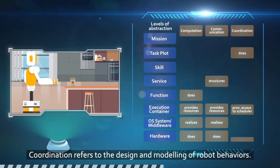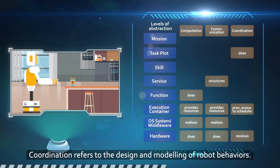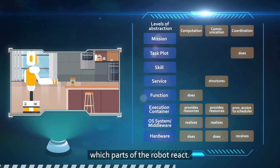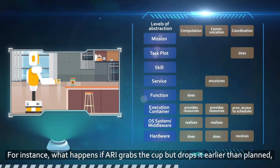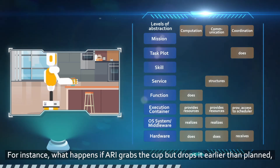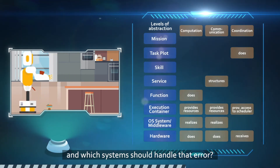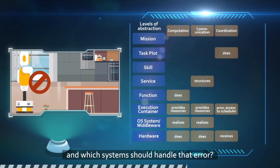Coordination refers to the design and modelling of robot behaviours — what are the adequate behaviour steps when an event happens and which parts of the robot react. For instance, what happens if Ari grabs the cup but drops it earlier than planned? And which systems should handle that error?